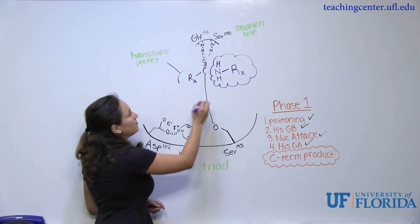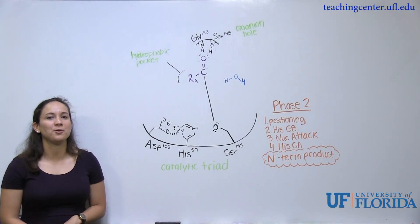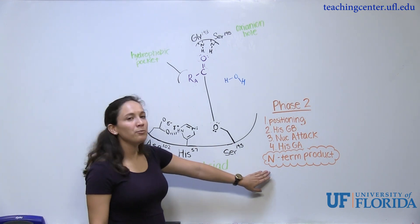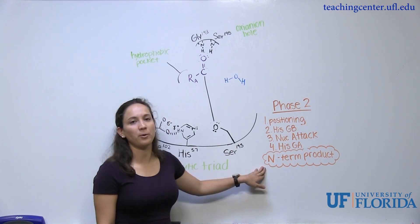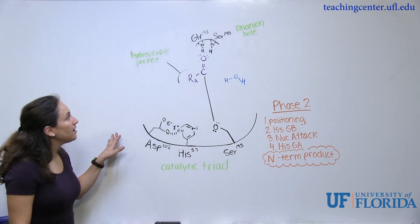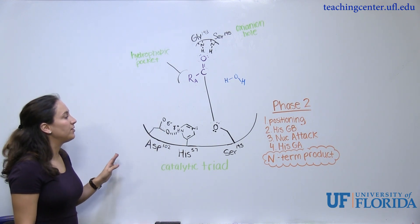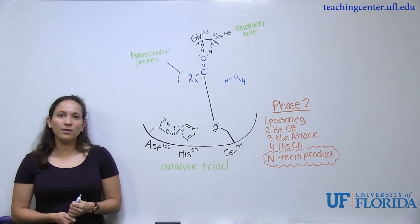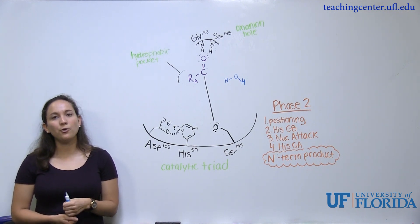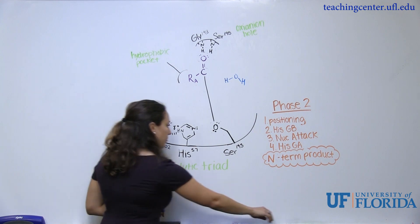Now we're going to go over phase 2 of the chymotrypsin mechanism. Notice that the steps are very similar to those in phase 1 — the only difference is that you're going to release an N-terminal product instead of a C-terminal product. The C-terminal product has dissociated into solution, and what remains is the N-terminal product still attached to the enzyme. The first step of phase 2 is the positioning step again, and since this is a hydrolysis reaction, this is where water is introduced. Water is placed into the reaction — that step is checked.